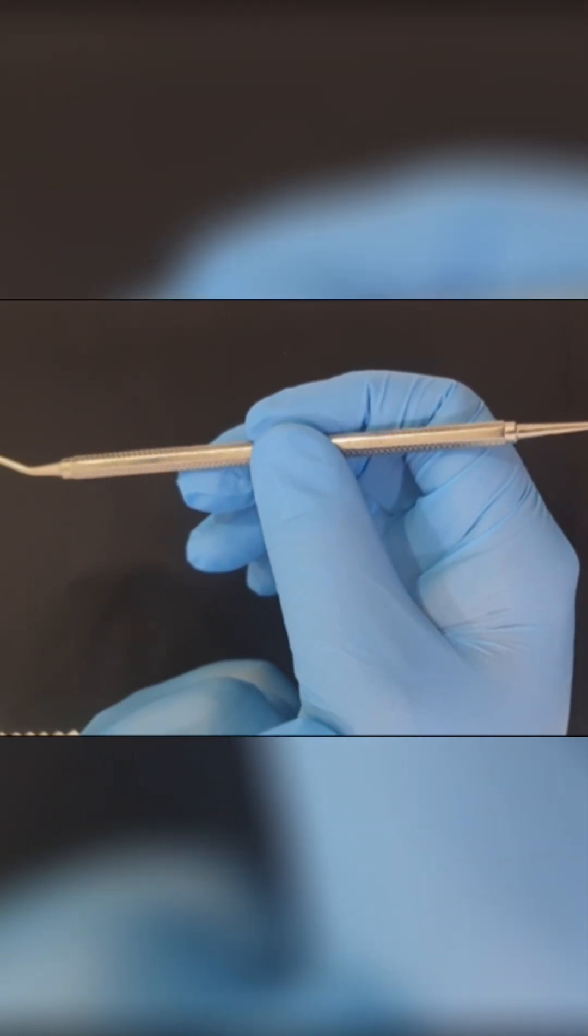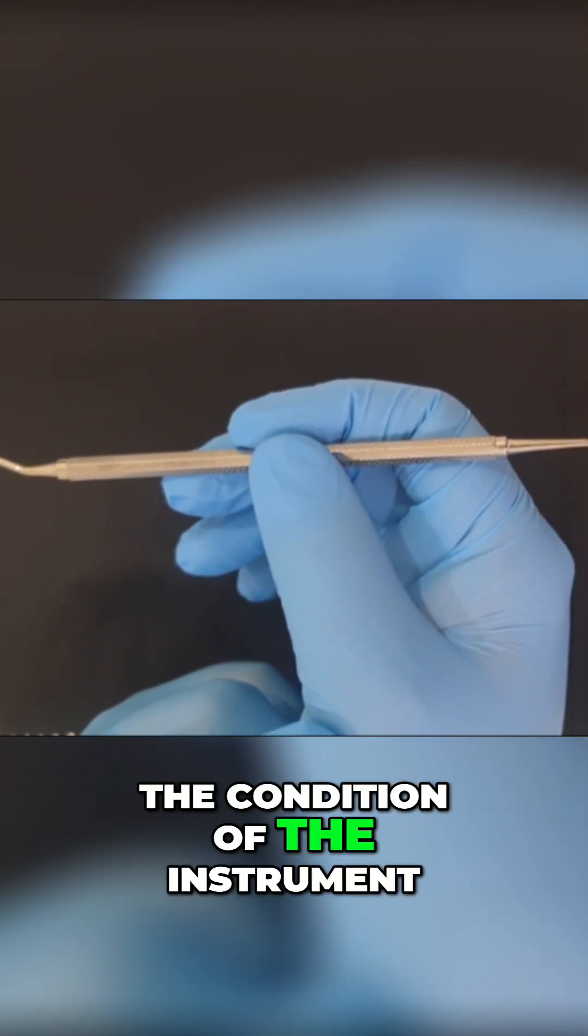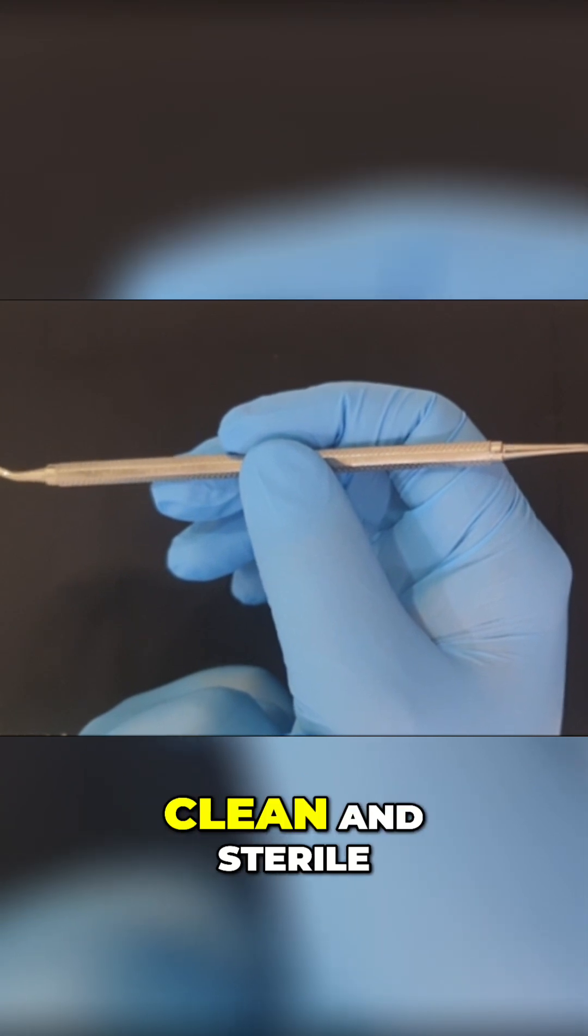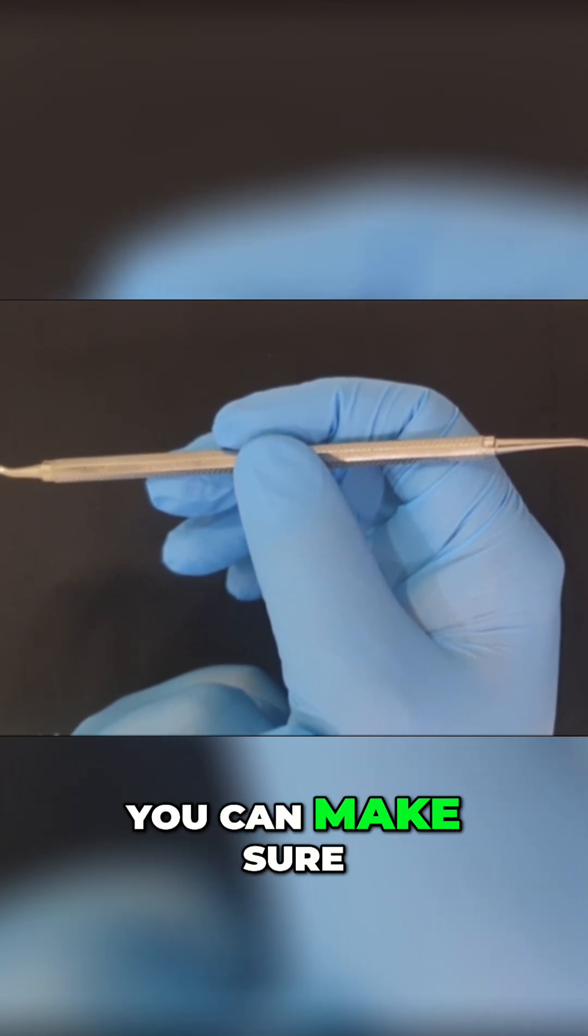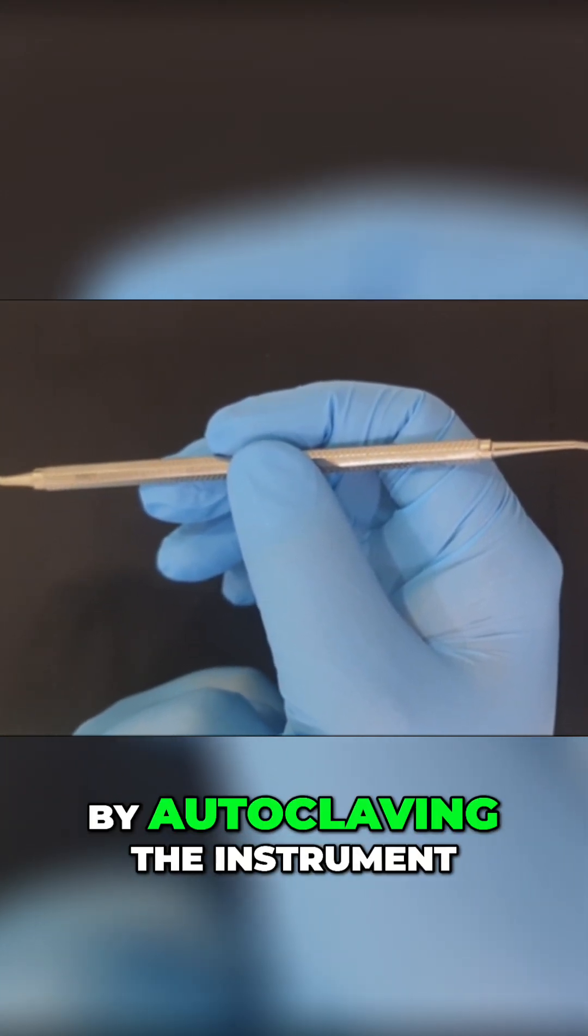The next principle is the condition of the instrument. The instrument should be clean and sterile. You can make sure the instrument is sterile by autoclaving the instrument.